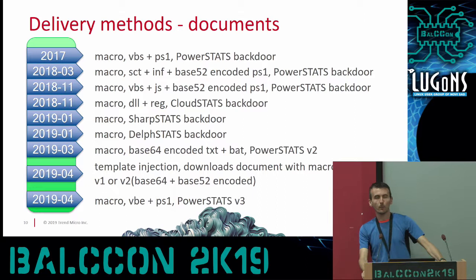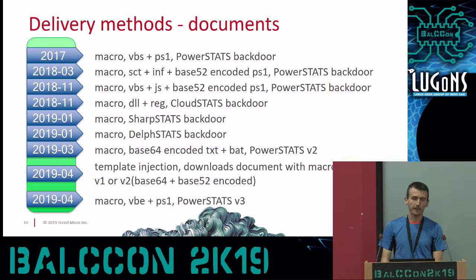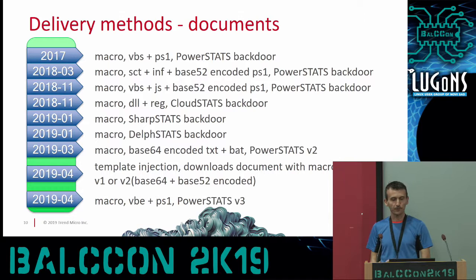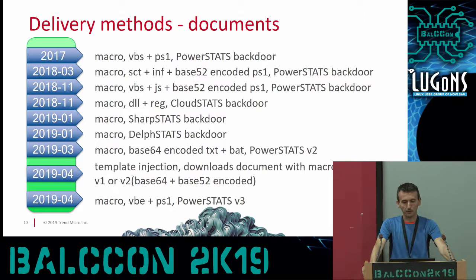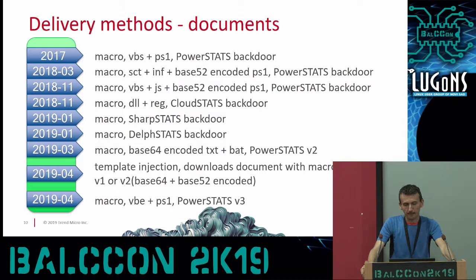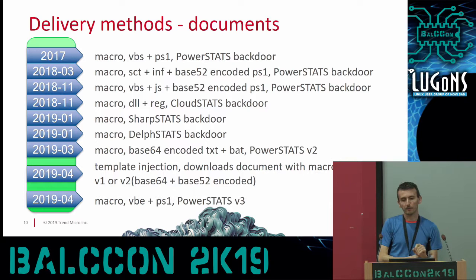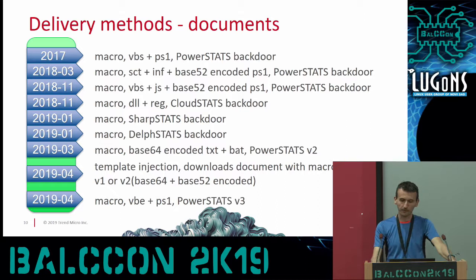After the victim enables macros, there have been many different delivery methods, changing over time. In this slide I try to summarize what happened - on the left you can see the year and month, on the right the evolution of the dropper. It always starts with a macro, with a short exception of template injections in April 2019. The macro then drops some files - usually Visual Basic Script and JavaScript, sometimes binary files - which through decoding processes reach a PowerShell backdoor, their custom-implemented backdoor, of which there have been several different versions.